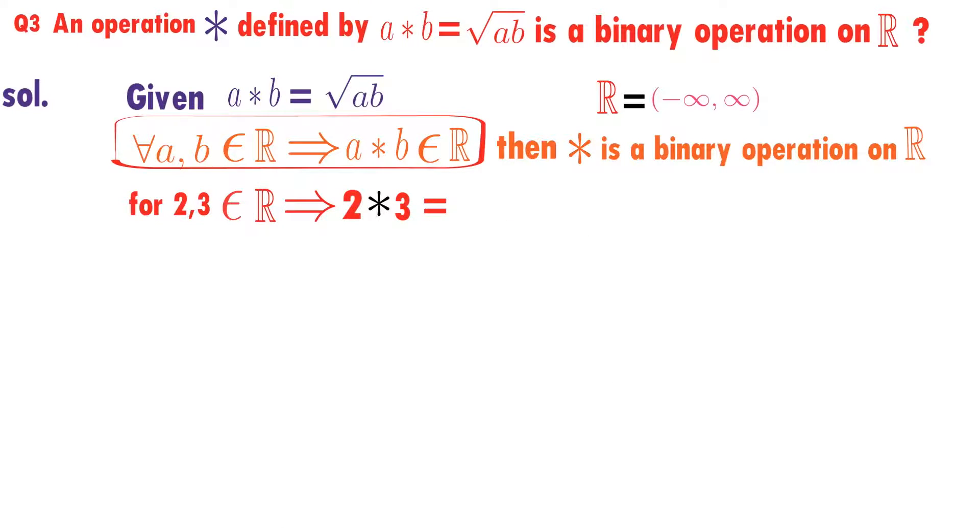What is 2 star 3? What is a star b? Square root of ab. So what is 2 star 3? 2 star 3 is square root of 2 into 3, that is root 6.